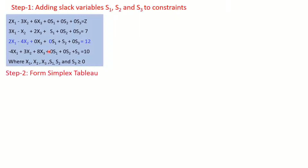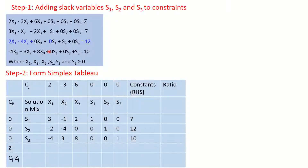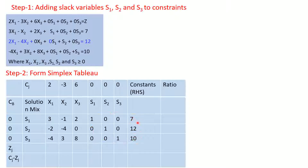Step 2 is to form the Simplex Tableau. The Cj row contains the coefficients of the objective function: 2, minus 3, 6, 0, 0, 0. The decision variables are x1, x2, x3 and the slack variables are s1, s2, s3. The tableau contains the coefficients of the decision and slack variables, and the right-hand side values 7, 12, and 10.